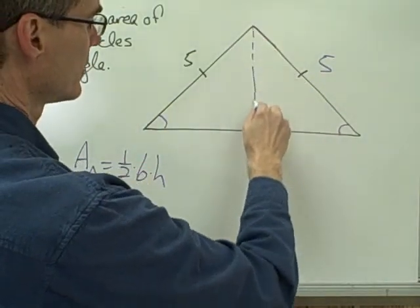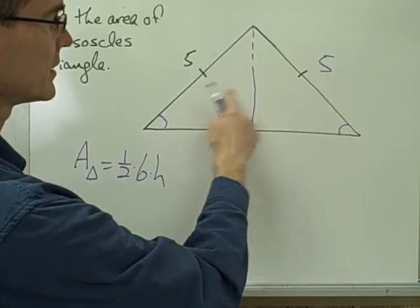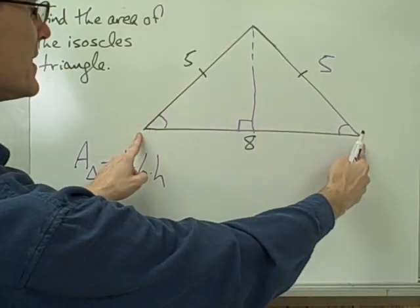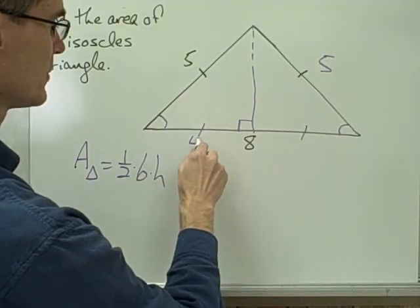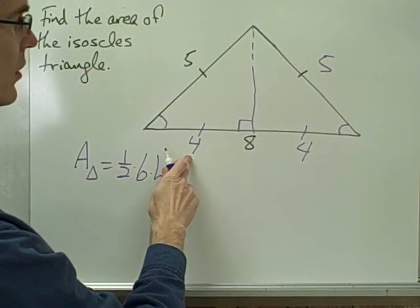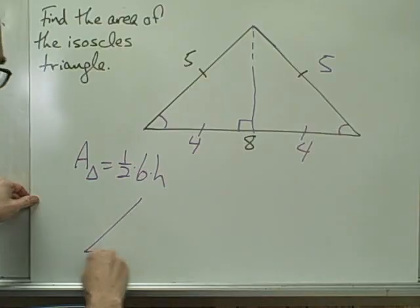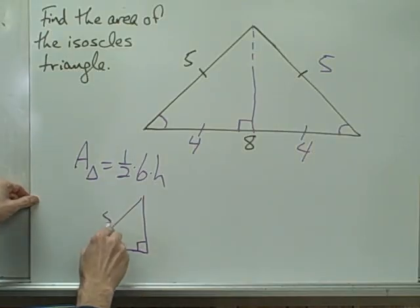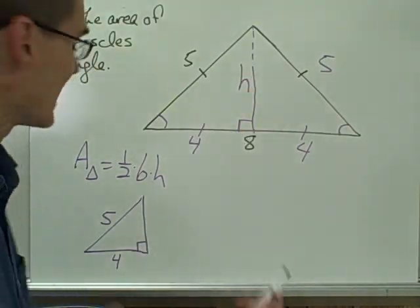I remember the property we just discussed: drawing the altitude divides the isosceles triangle into two congruent triangles. Since these two triangles are congruent, this side must equal this side, which means each half of the base is 4, because they add up to 8. So I know one leg is 4 and the hypotenuse is 5. Let me break this small right triangle out — it's a right triangle with leg 4, hypotenuse 5, and I'm looking for the height H.